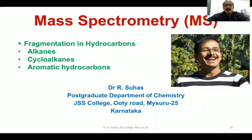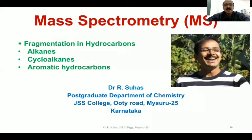Hello everyone. In this module, we are going to study about the fragmentation in hydrocarbons. Since the beginning of mass spectrometry, every class of organic compound shows different kinds of fragmentation, which is why mass spectrometry is called a chemical fingerprint. Fragmentation shown by alkanes will not be shown by alkenes, and that shown by alkenes will not be shown by alkynes. In this module, we will study fragmentation in alkanes, cycloalkanes, and aromatic hydrocarbons.